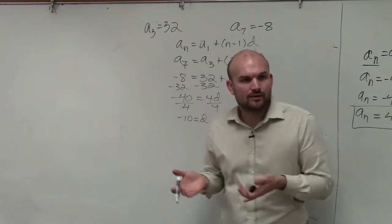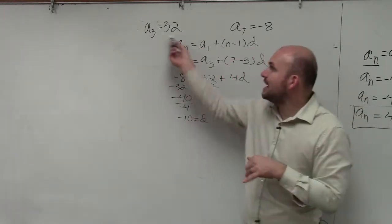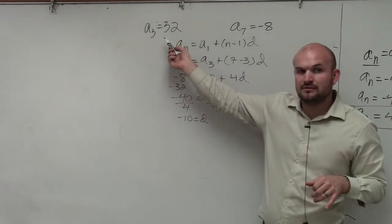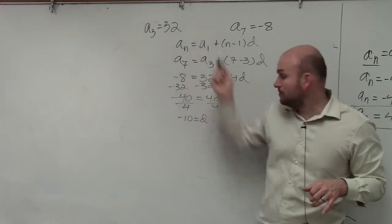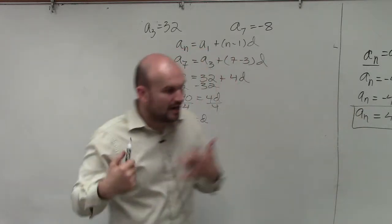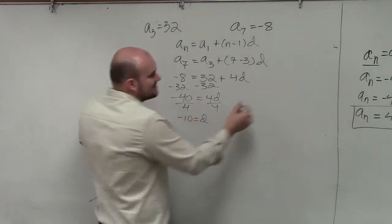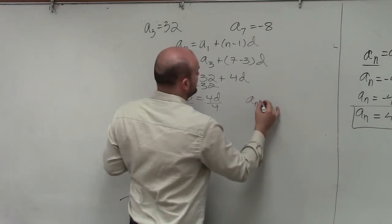So now we know what negative 10 is. We could count back from 32 to get to a sub 1. Or we could also go ahead and take this and go back and use the explicit formula again.